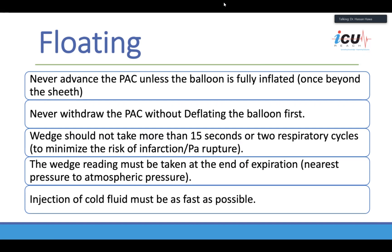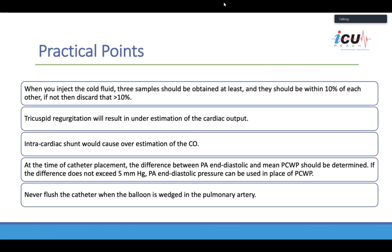With newer catheters, you don't even need to inject cold saline, but if you do, cold fluid must be injected as fast as possible. Accept readings within 10% difference from each other, and cancel readings more than 10% apart. Usually we take three readings. Tricuspid regurgitation will result in underestimation of cardiac output, because as you inject the cold saline, some will come back, and you may end up underestimating cardiac output.